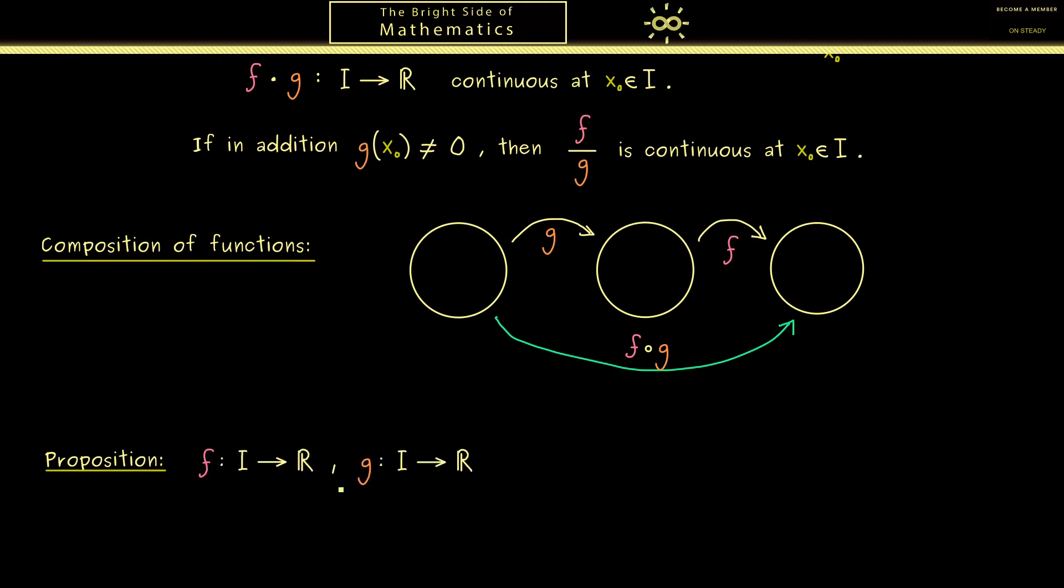Our input is again given by two functions. However as the picture suggests above we could have different domains. Therefore let's use a J for the function g. So in our picture we have J here and I here.